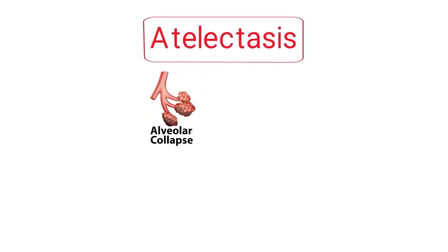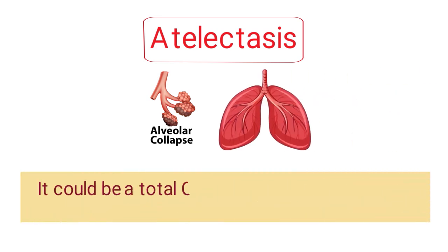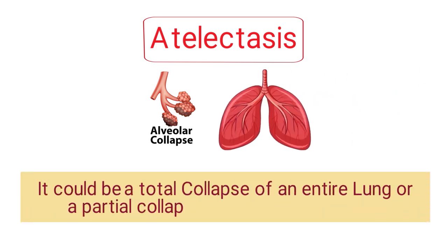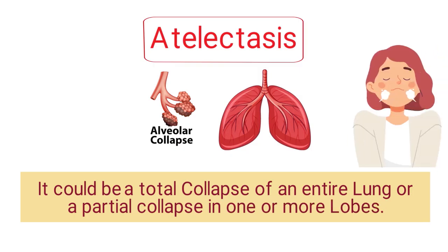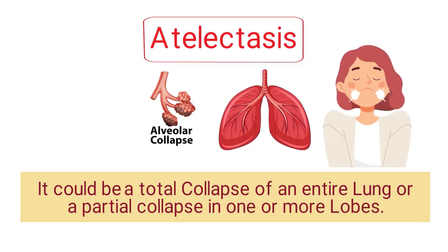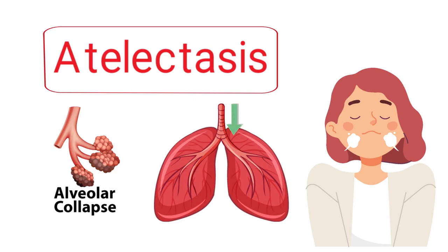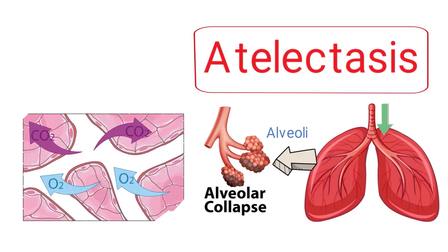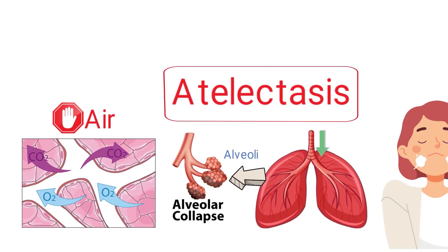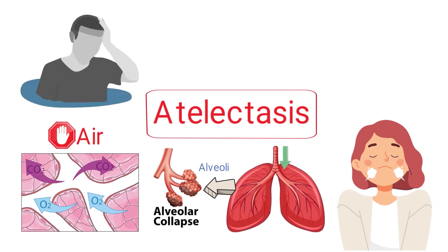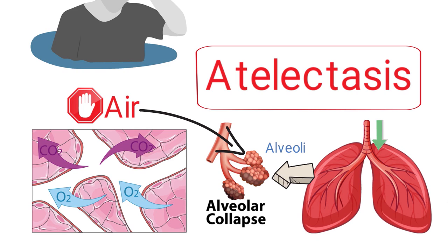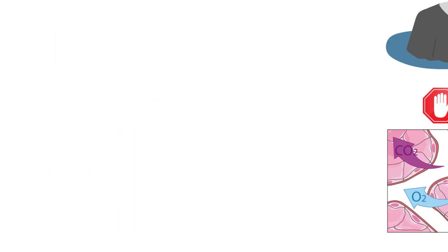First and foremost, we need to talk about atelectasis. Atelectasis is a term that refers to a collapse in the alveoli of the lungs. It could be a total collapse of an entire lung or a partial collapse of one or more lobes. As you take a breath in, air moves through the mouth and trachea down through the airways until it reaches the tiny air sacs known as alveoli, where gas exchange of oxygen and carbon dioxide takes place. If air fails to reach this region, it can result in many different problems. The alveoli that are not filled with air cannot expand, and this is what's known as atelectasis.